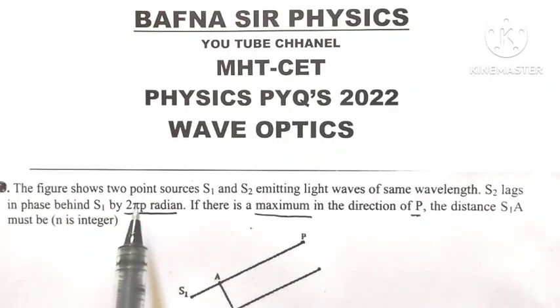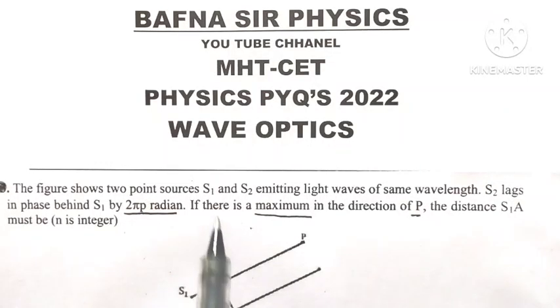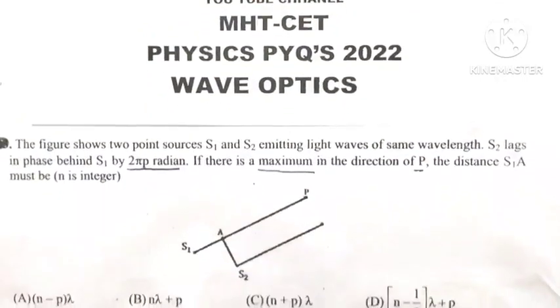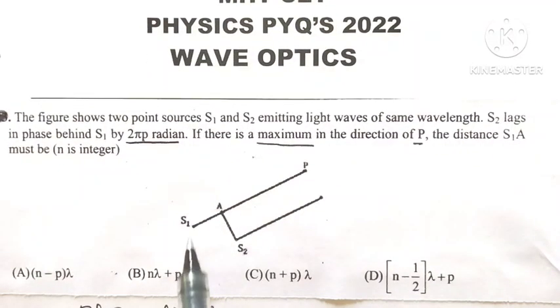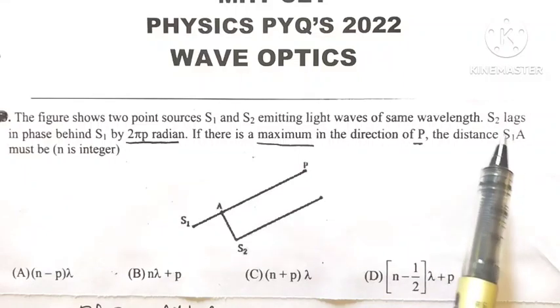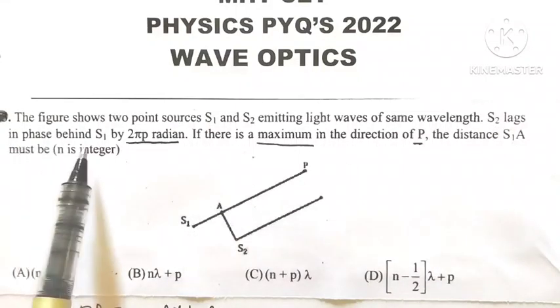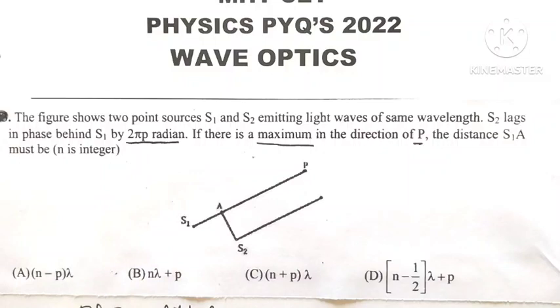The figure shows two point sources S1 and S2 emitting light waves of the same wavelength, such that S2 lags in phase behind S1 by 2πp.